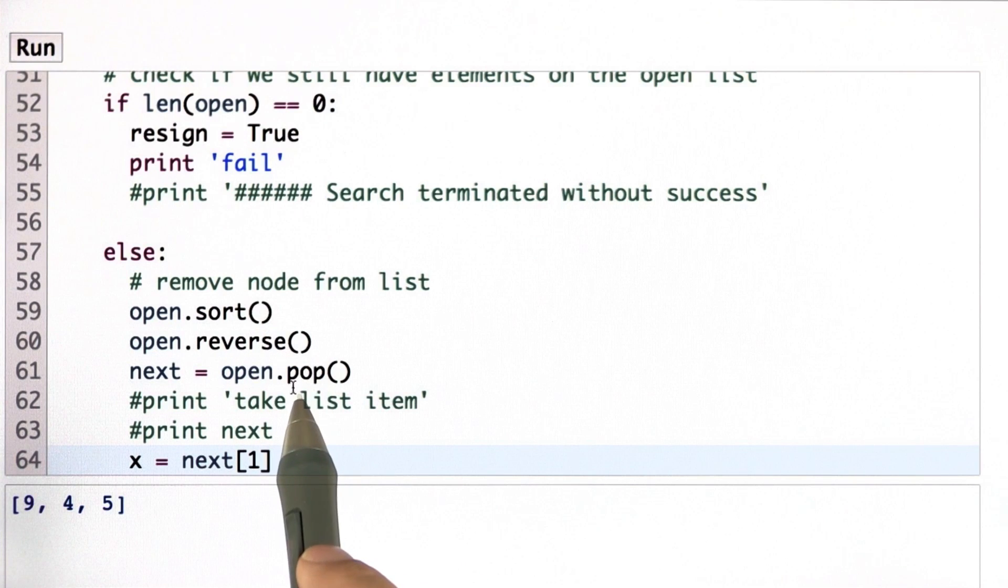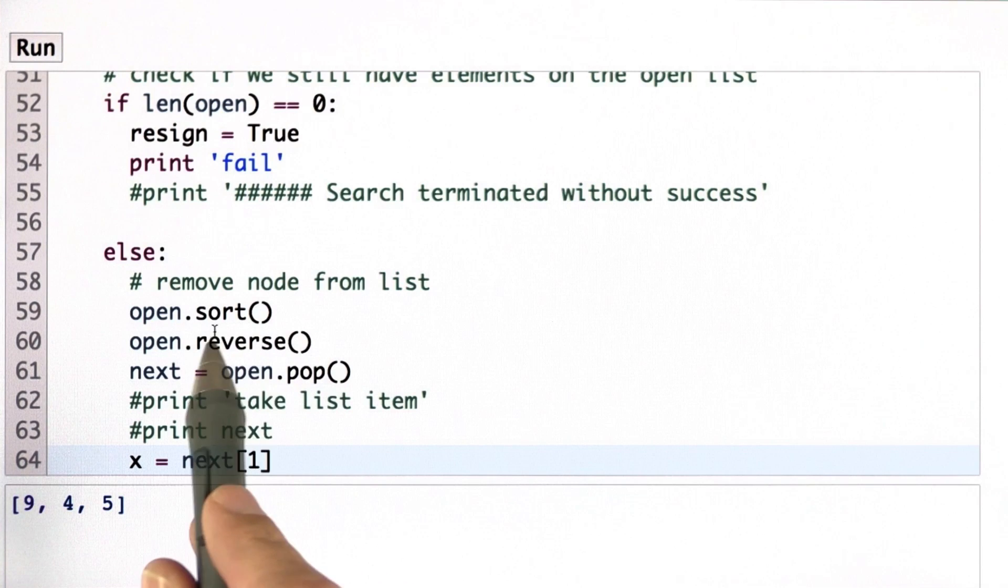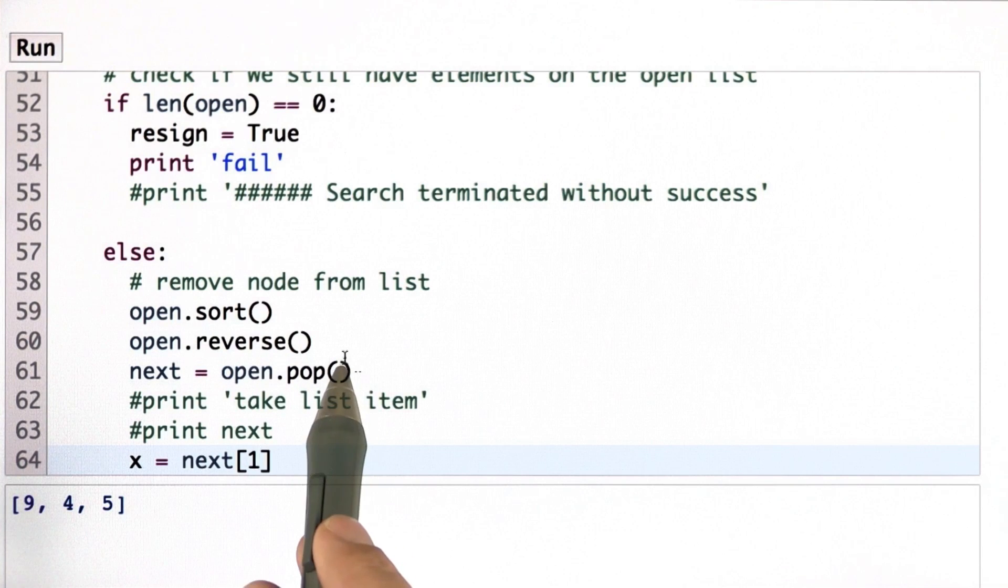And now I want to pop the element with the smallest number. Unfortunately, pop pops at the end. So I just reverse the list and then pop the element with the smallest g value from that list. There's a little bit of a trick here. It's not very elegant. It's also not very efficient, but it does the job for now.